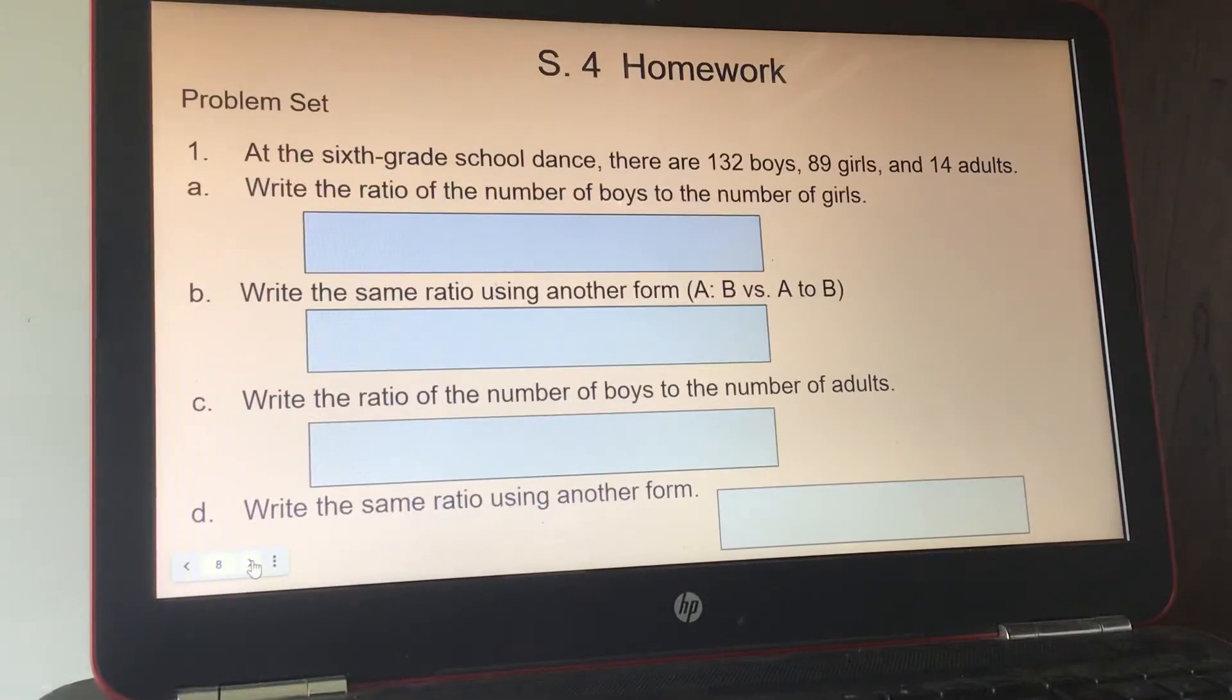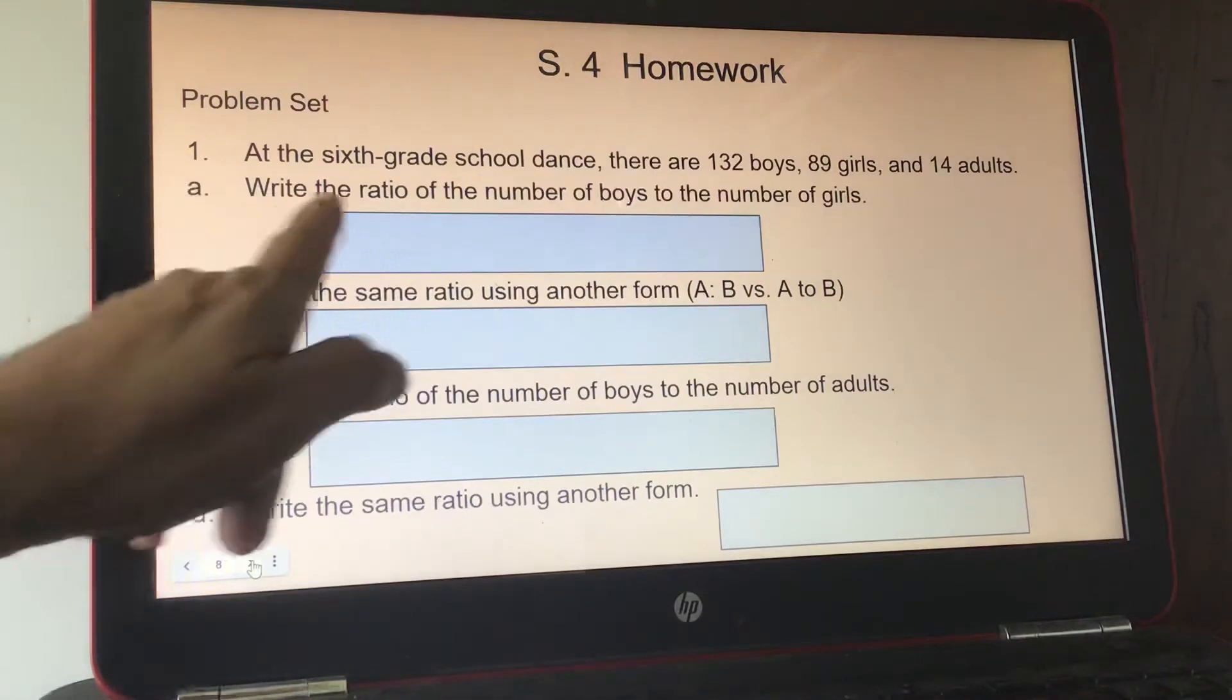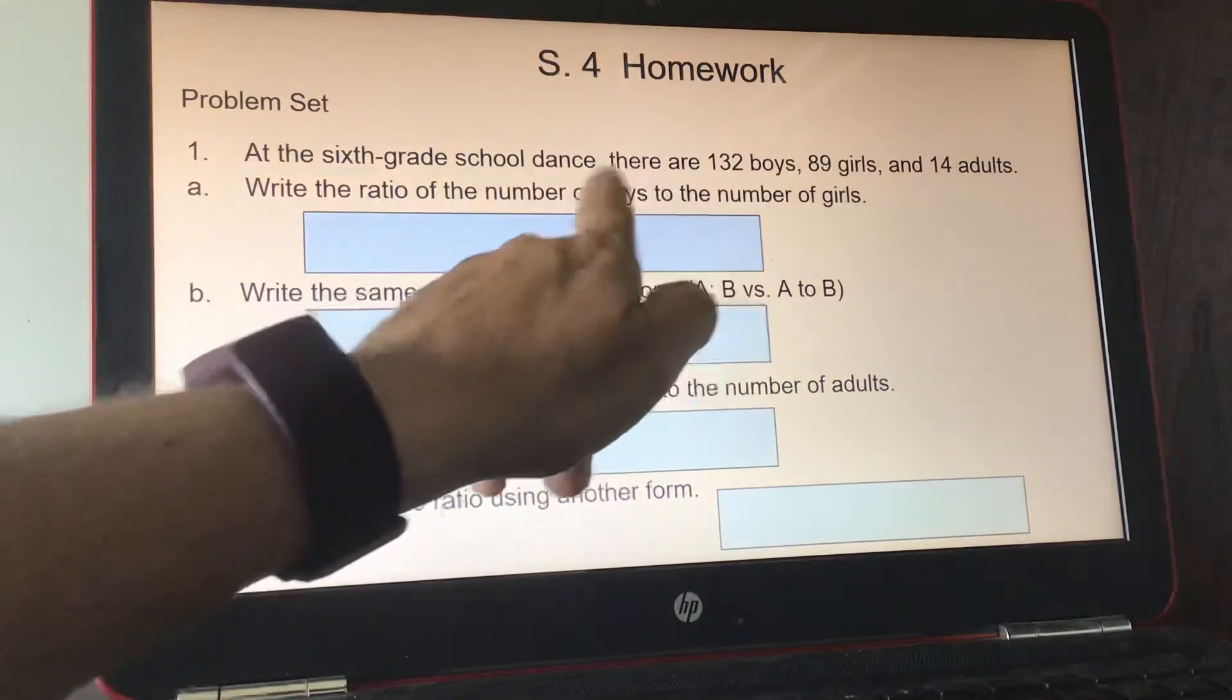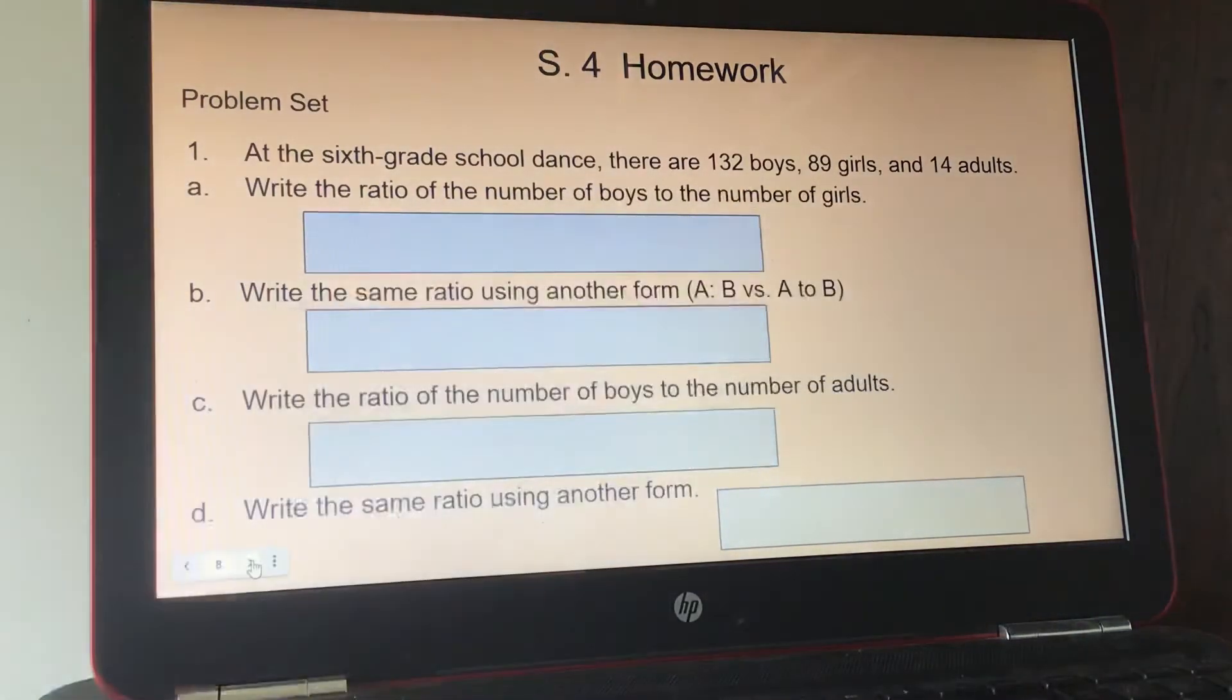And then your homework. Number 1, at the 6th grade school dance, there are 132 boys, 89 girls, and 14 adults. So for A, they want you to write the ratio of the boys to the number of girls. So they said boys first, so put that number first, and then either put the colon sign, the two dots,